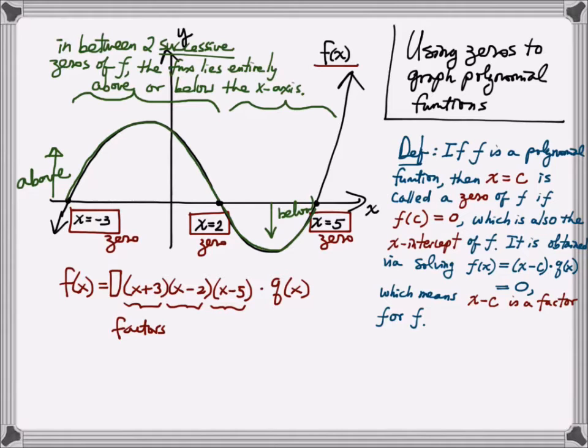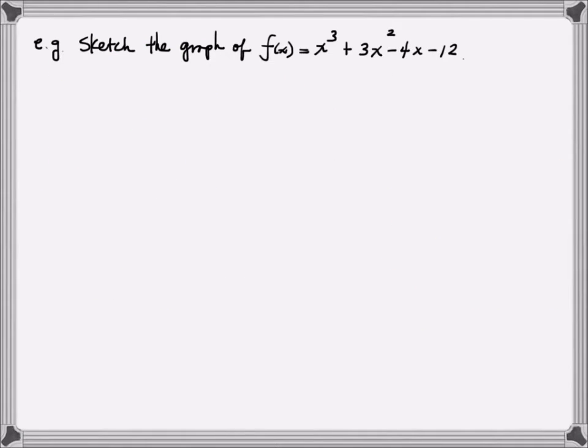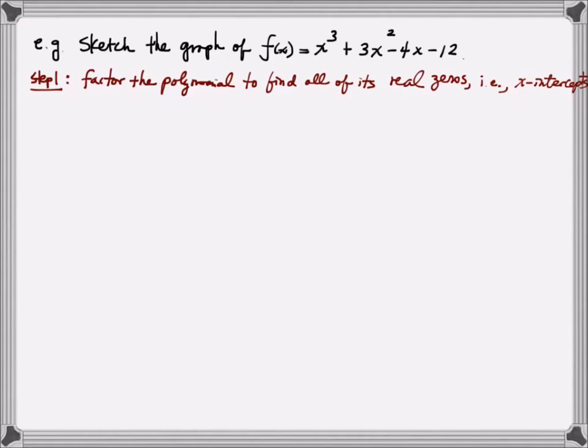Knowing this information along with the knowledge of the end behavior helps us to sketch the graph of polynomials. Next, I'm going to show you a step-by-step process of sketching the graph of a polynomial using the zeros. Here I want to sketch the graph of f of x equals x cubed plus 3x squared minus 4x minus 12. Step 1 is to factor the polynomial to find all of its real zeros, meaning the x-intercepts. To factor, we notice that there are four terms in this polynomial.